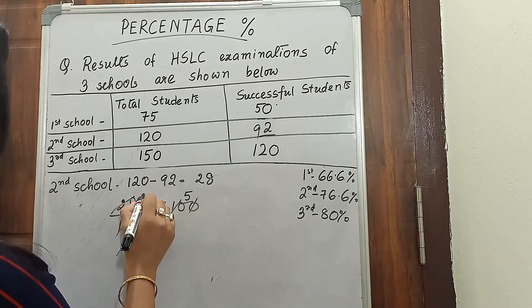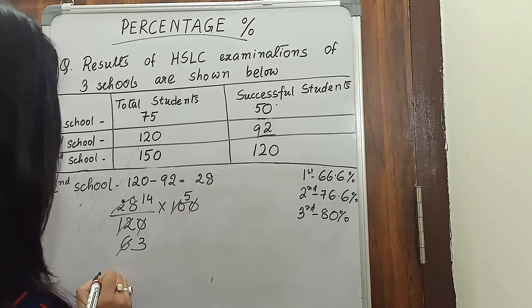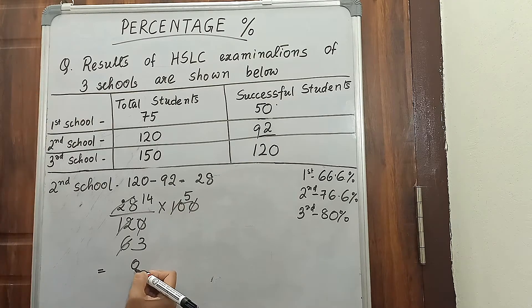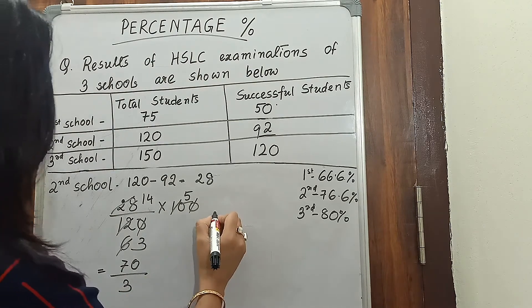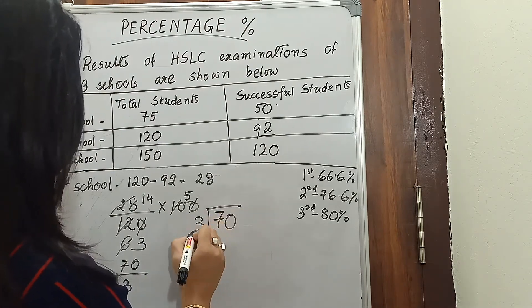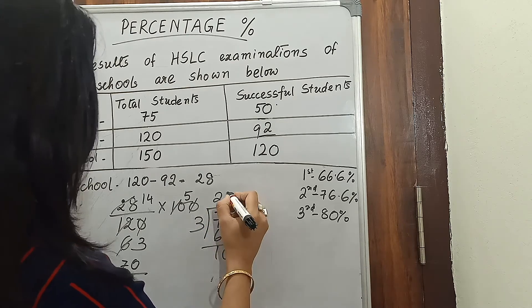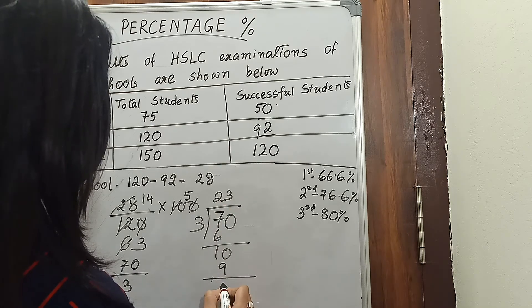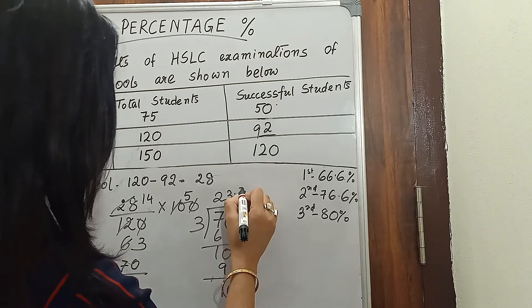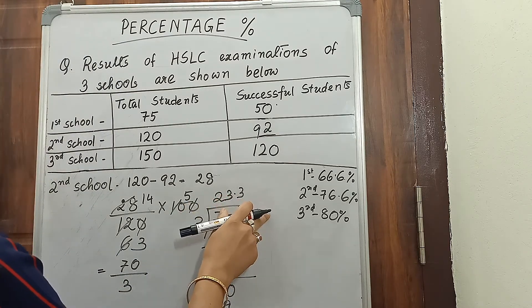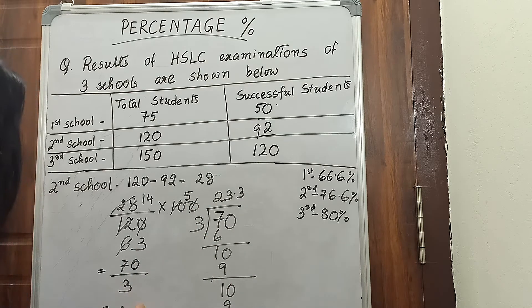Simplifying 28 over 120: 14 over 60, then 7 over 30, so 7 into 10 gives 70 divided by 3. Dividing 70 by 3 gives us 23.3 percent. So 23.3 percent are the unsuccessful students of the second school.